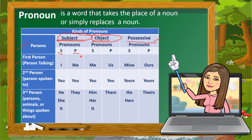For third person — persons, animals, or things spoken about — in subject pronouns we use 'he,' 'she,' and 'it' if singular, and 'they' if plural. In object pronouns, we use 'him,' 'her,' and 'it' if singular, and 'them' if plural.